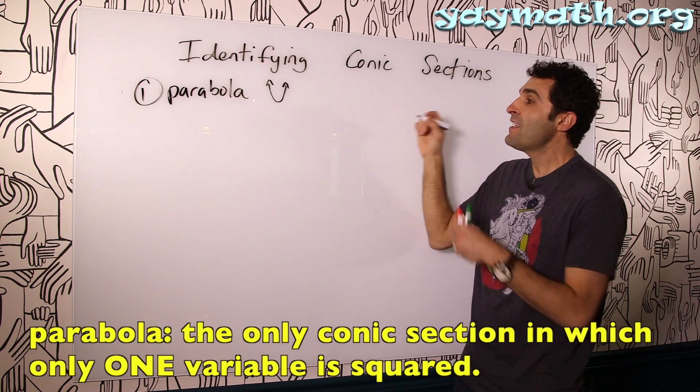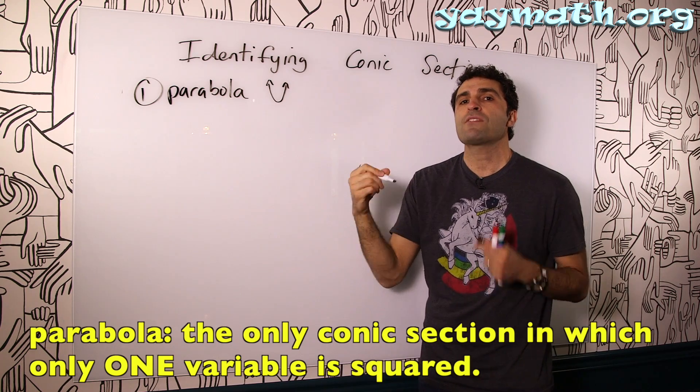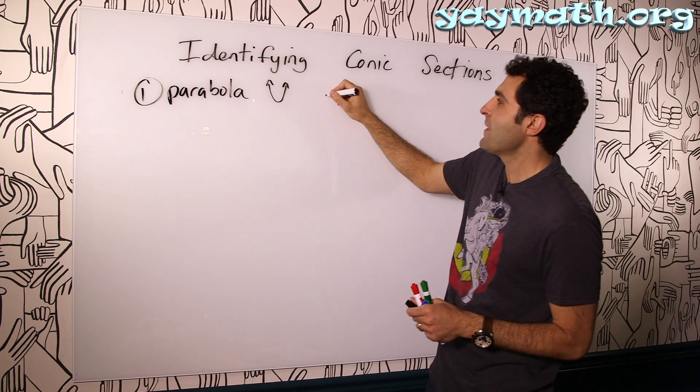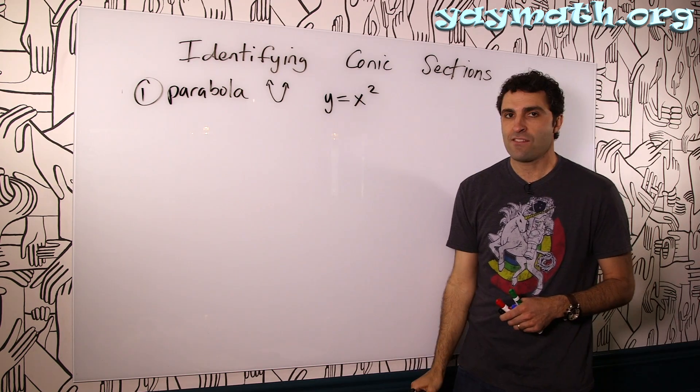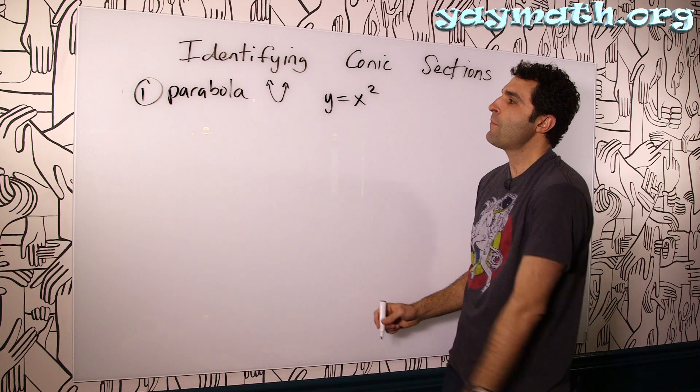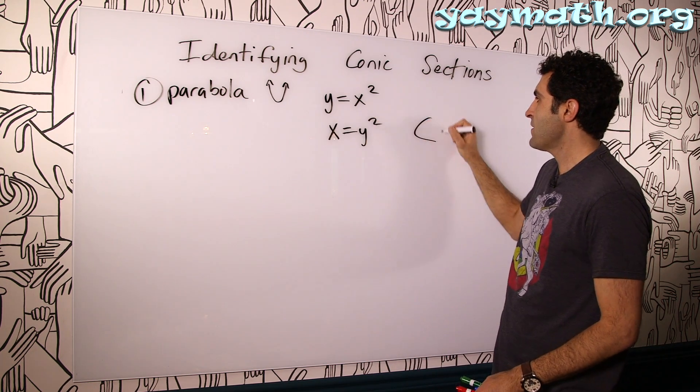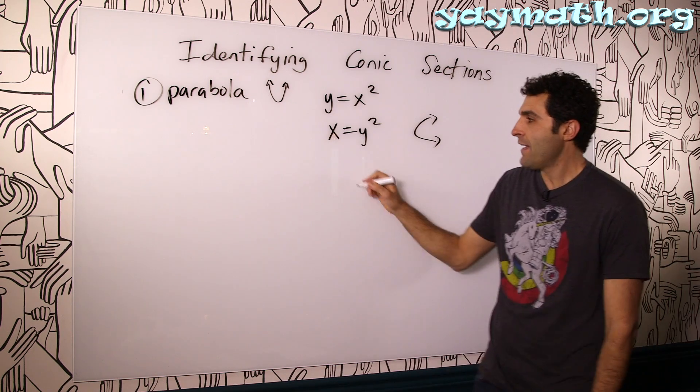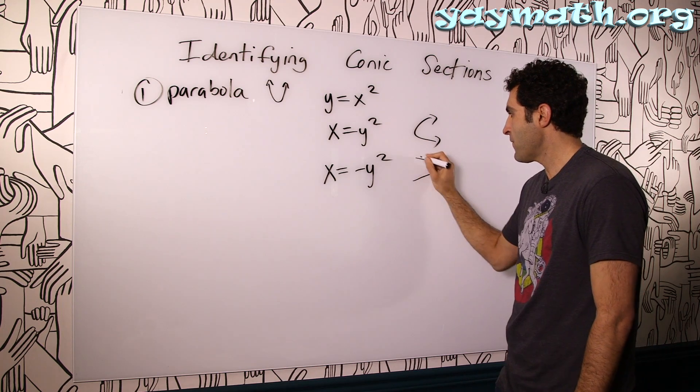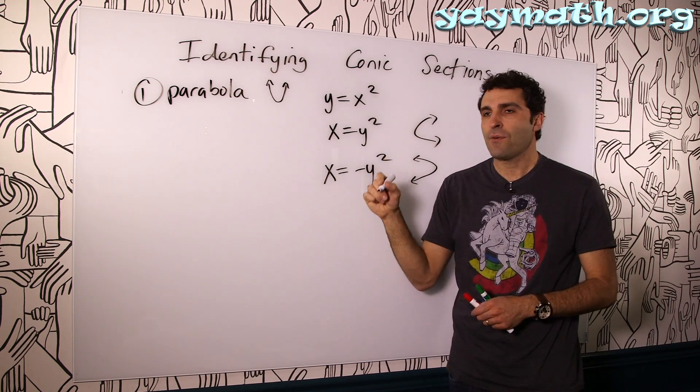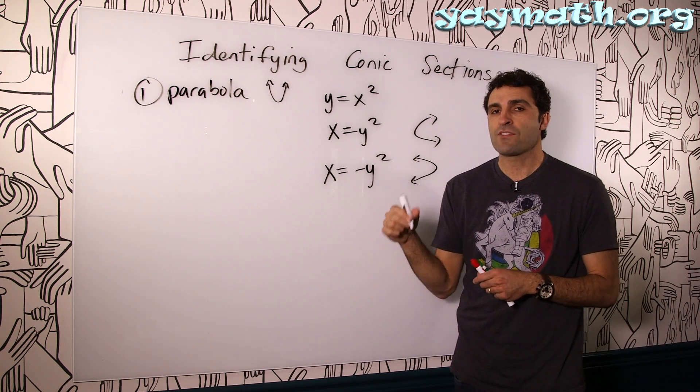So the parabola is basically the only conic section in which, of the two variables, only one of them is squared. That's the giveaway. So you have something like this. You have your y equals x squared, for example. You'll notice only the x is squared, in which case that's the parabola that's facing up and down. If you had x equals y squared, that's the parabola that's facing right. If you had x equals negative y squared, that in turn would be the parabola facing left. So no matter what throughout the equation, no matter how you slice it or dice it, you will never see both of the variables squared.